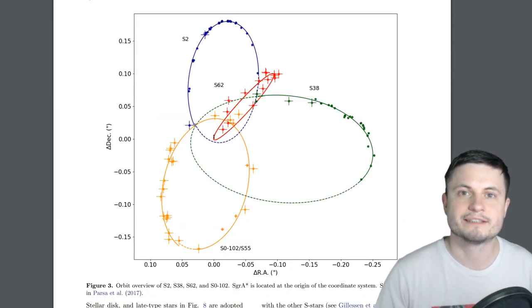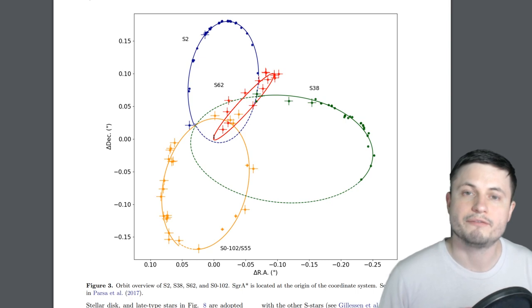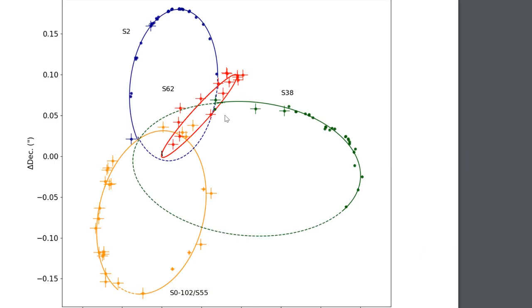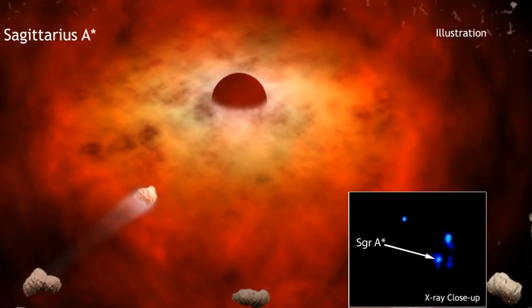The star now known as S62 seems to have a very unusual orbit, very eccentric orbit as we usually say, which as you can see right here seems to be very different from any other object in this region. S62 takes approximately 9.9 years to go around Sagittarius A star, the central black hole once. And as of today this is one of the more unusual stars we've discovered so far.